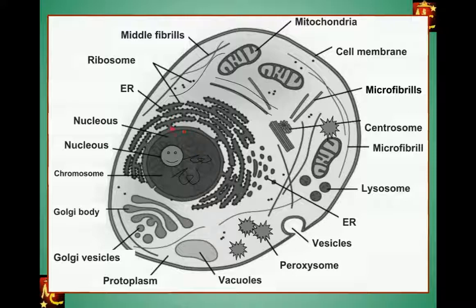The endoplasmic reticulum starts from the nuclear membrane — it is connected to the nuclear membrane and spreads outward. It has finger-like protrusion structures, and many ribosomes are attached to the wall of this endoplasmic reticulum, so this is called rough endoplasmic reticulum. These ribosomes, when attached to the endoplasmic reticulum, can synthesize protein. There are also many microfibers or stress fibers that give shape and make the skeleton of the cell.